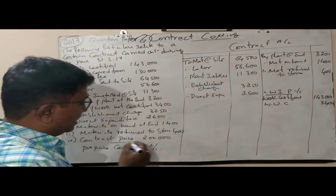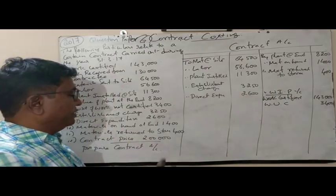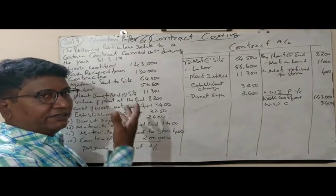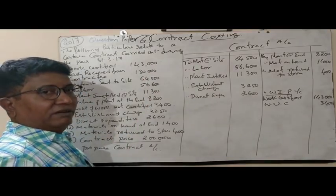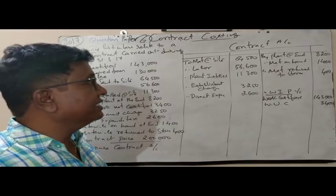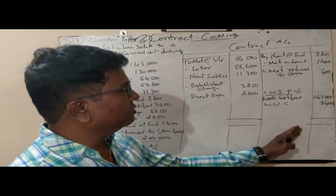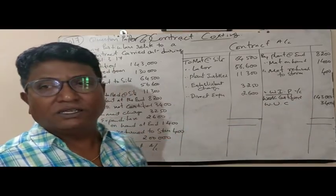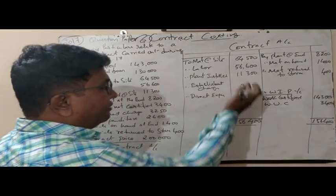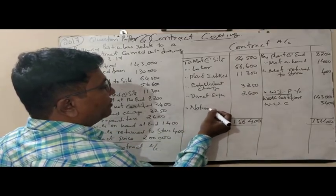The contract price is 2,00,000 rupees — the total price for which the contractor undertook the job. But the contractor has completed only 1,43,000 rupees of work certified by the architect, meaning the contract is not yet complete. This is called an incomplete contract. The credit side total is 1,56,400 rupees. Deducting all debit items from this, we get the profit, which we call notional profit.